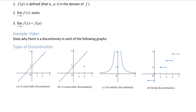Recall the three conditions for f to be continuous at a. First, f of a is defined. Second, the limit as x approaches a of f of x exists. And third, the limit as x approaches a of f of x equals f of a.